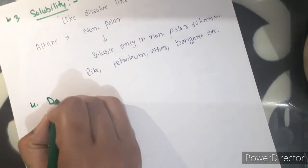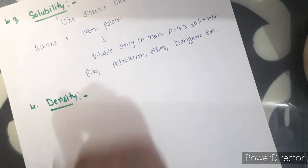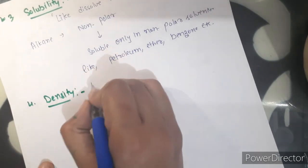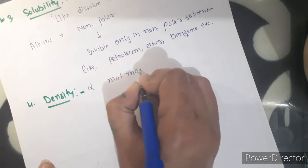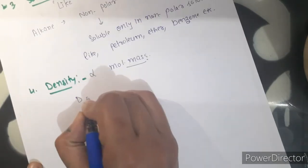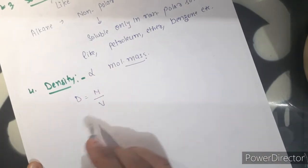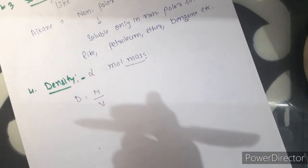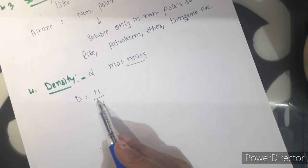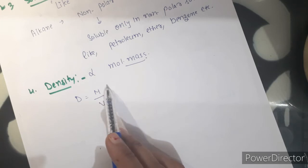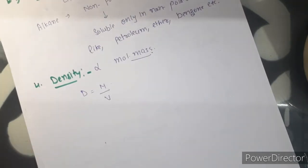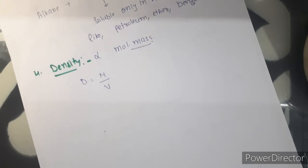Fourth property is density. Density increases with increase in molecular mass — density and molecular mass are directly proportional, because density is molecular mass divided by volume. As we increase the number of carbon atoms, molecular mass increases and density increases. But alkanes are much lighter in comparison to water. These are the important physical properties of alkanes.